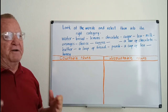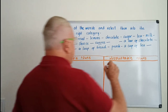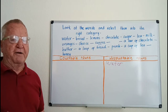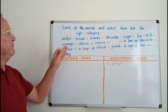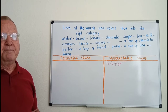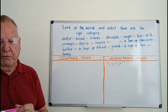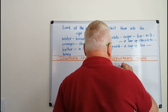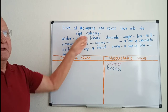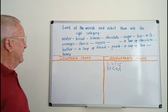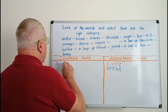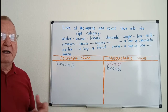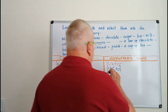Water is uncountable — we say 'a glass of water' or 'a bottle of water' to make it countable. Bread is uncountable. Lemons — yes, we can count those, so lemons are countable. Chocolate is uncountable. Sugar is uncountable.